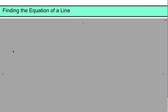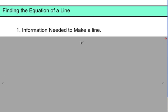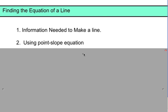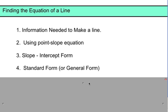Today we're going to look at finding the equation of a line. In this particular lesson you're going to learn about the information you need to make a line, using the point-slope equation — my personal favorite — slope-intercept form, and standard or general form. So let's get right to it.